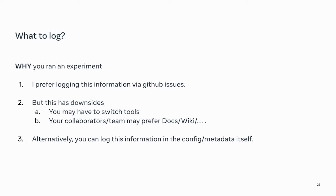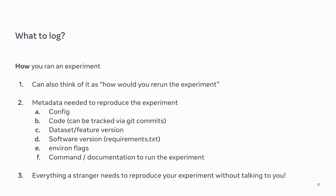Another important thing to log is how to run an experiment — think of this as all the information a stranger would need to read your experiment and reproduce your results without talking to you. This includes metadata, config, the code used to run the experiment (generally tracked by git commits), the version of datasets or features, the version of different software, environment flags, commands, and documentation. Anything a person would need to reproduce your results should be tracked.